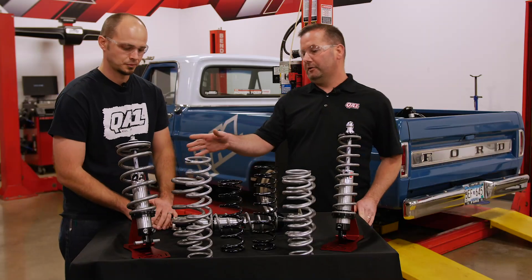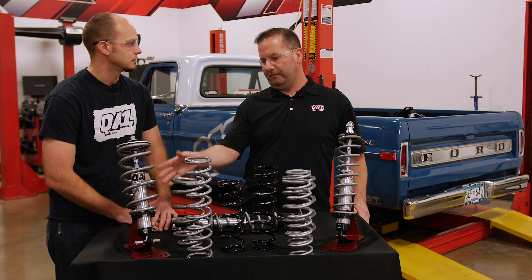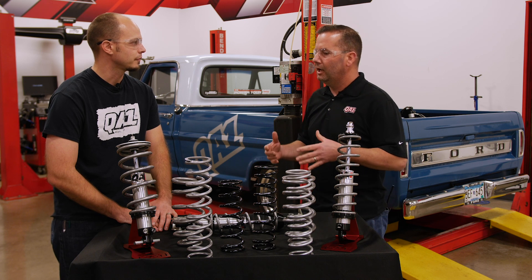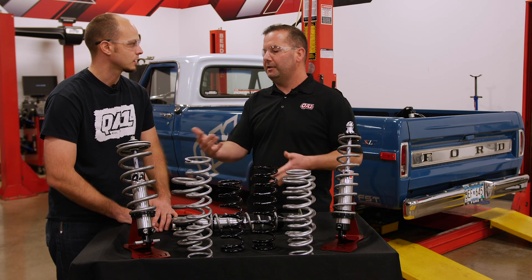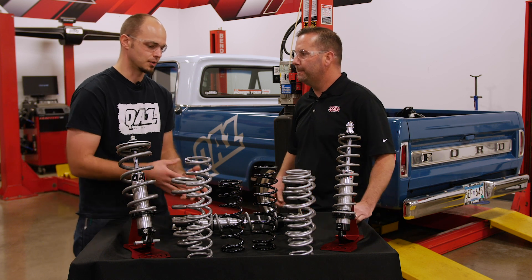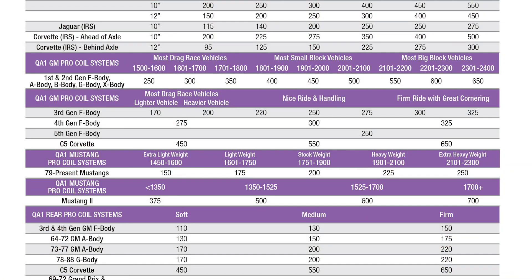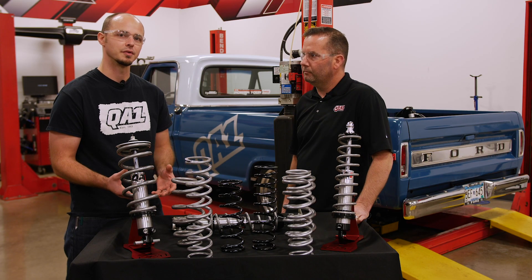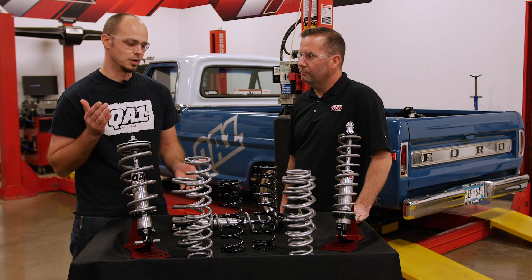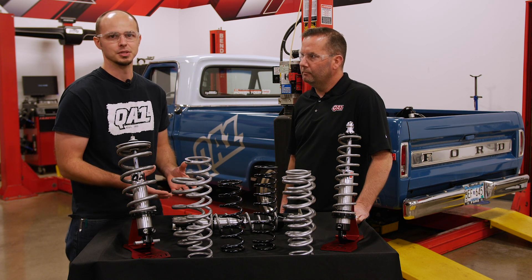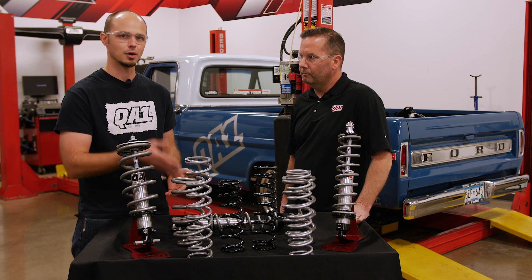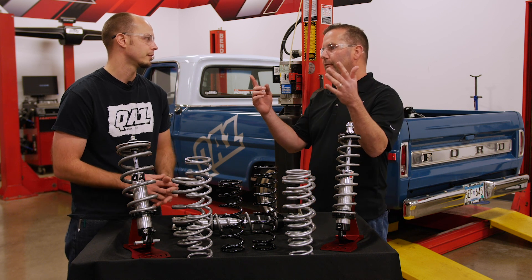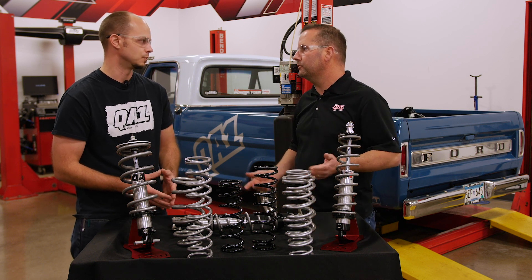We've got front coilovers for GM applications and some Ford applications — very popular products designed for those specific vehicles. We have a spring rate chart that will narrow it down based on the front end weight of the car. For some of these applications, we list 10 spring rates from 250 pounds through 750 pounds per inch, narrowed down into 100-pound increments for the front end weight. We have a handy chart on the website showing the front end weight and the recommended spring rate for street applications.